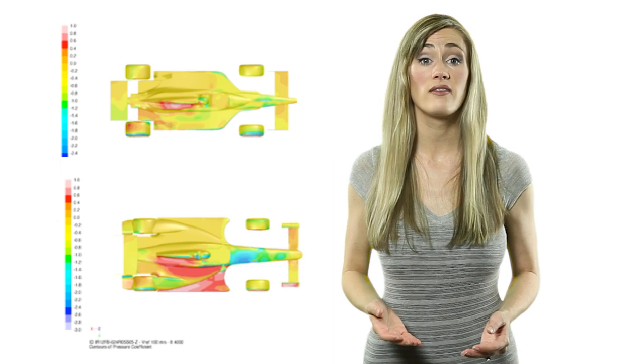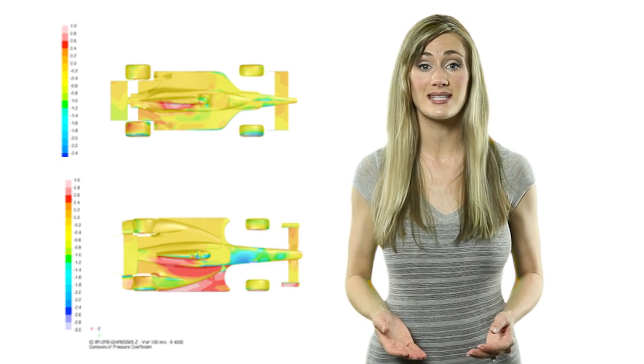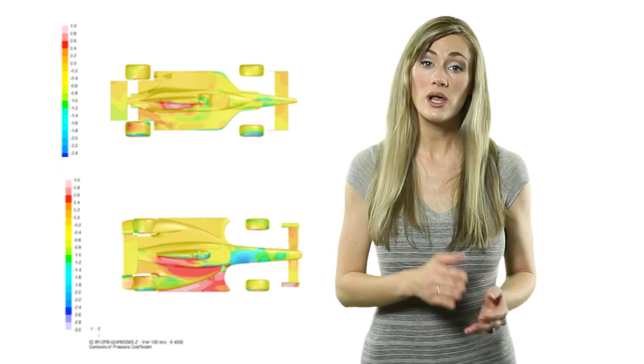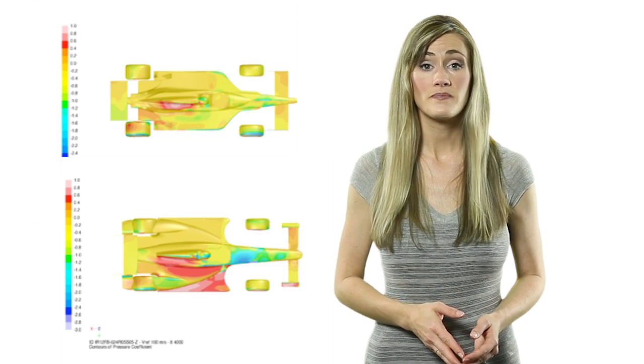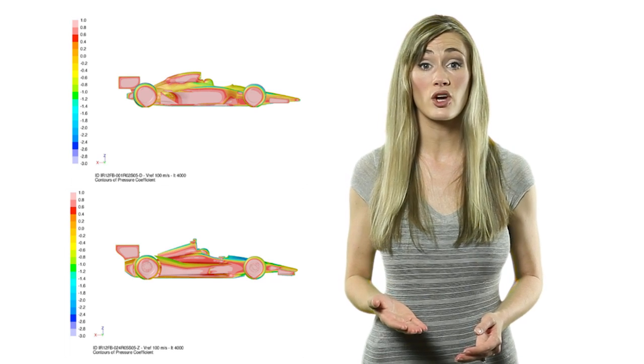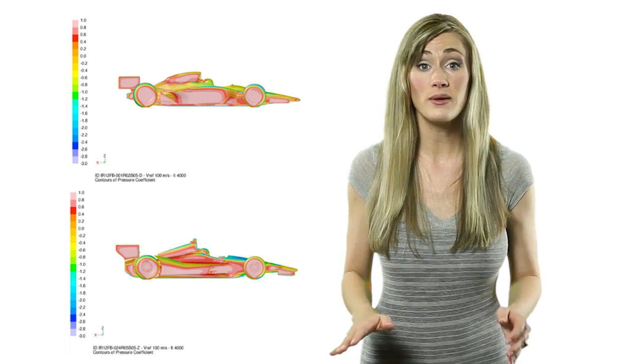Dallara designers found that their design changes reduced the static pressures on the bottom of the car, on the windward side, while increasing those on the top side. In this way, Dallara engineers found that they could reduce the moment around the car's center of gravity and eliminate the chances that the car would lift off.